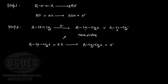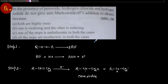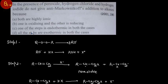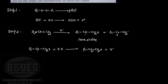Markovnikov addition has already been discussed in detail in the alkenes chapter of Hydrocarbons, so we won't revisit it here. Now, in the case of hydrogen chloride and hydrogen iodide - let's look at what happens in the HCl case.